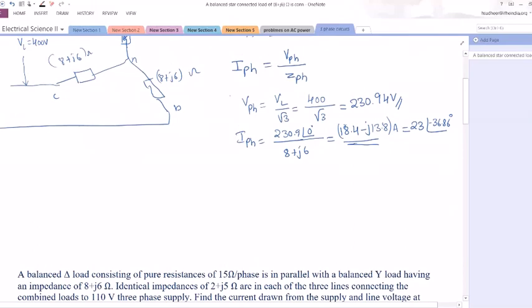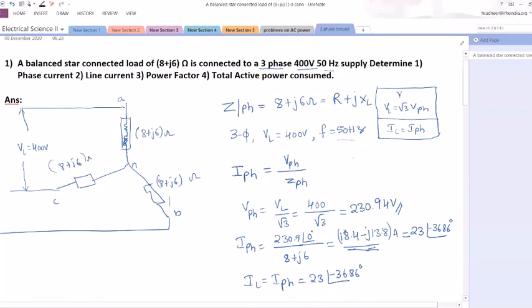So he has not asked exactly to draw the phasor diagram, but if you want to draw the phasor diagram, you can draw the complete phasor diagram. Let us do it later. So we got the phase current. Next, we need to calculate the line current. Line current is equal to phase current in star connection, that is 23 at an angle of minus 36.86 degrees.